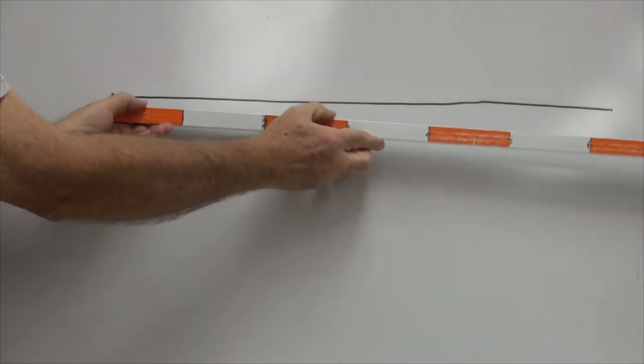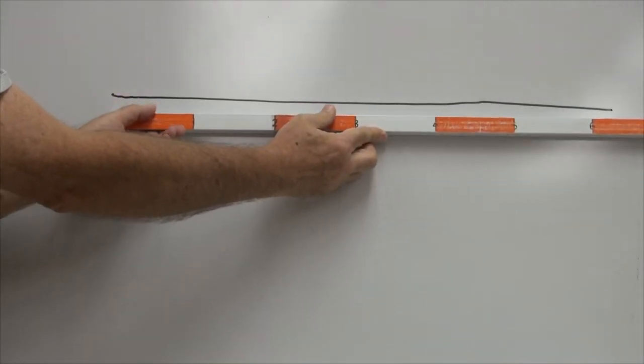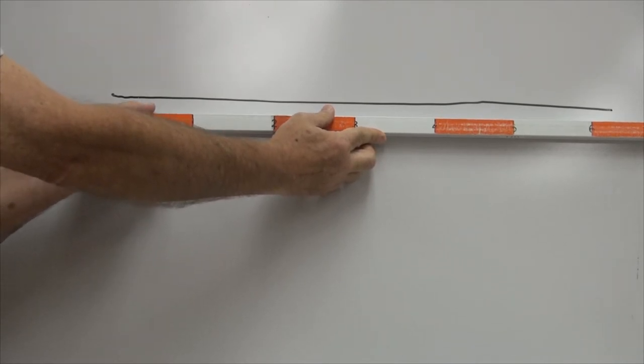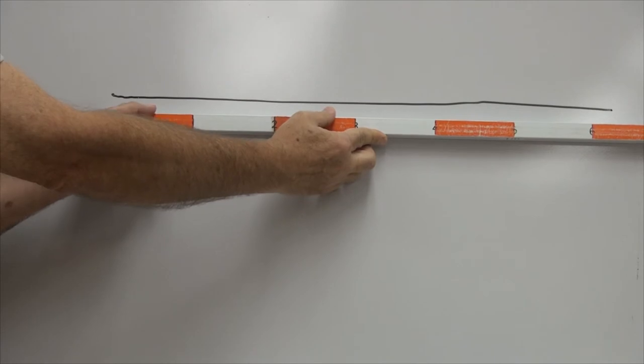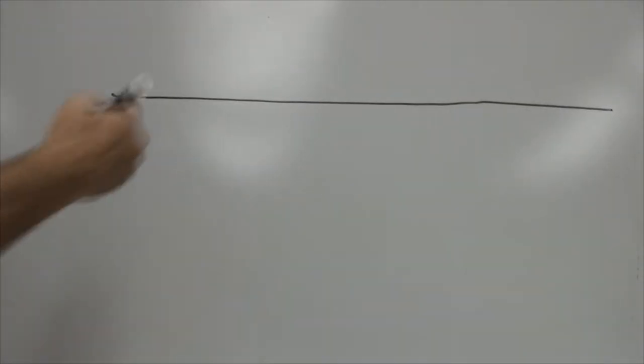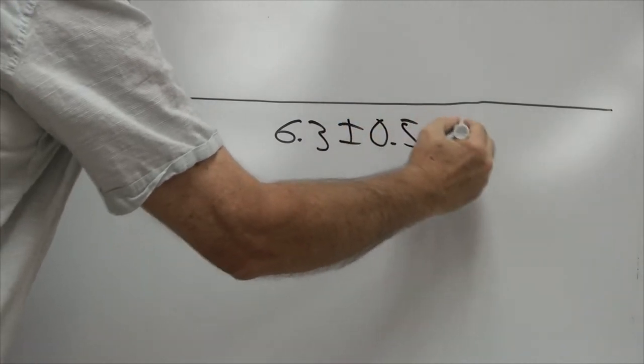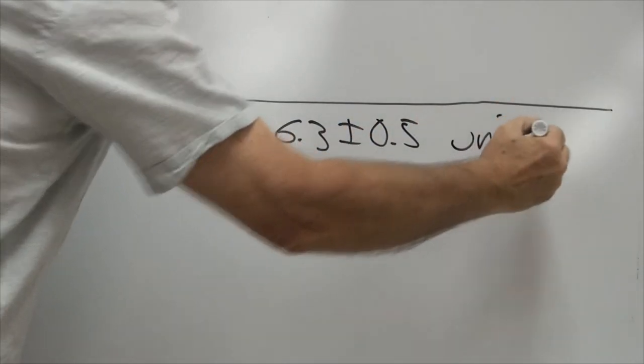To measure the length of this line, we place the meter stick next to it, and we see that the length lies somewhere between 6 and 7 units. The rule of thumb is to take the experimental uncertainty in the last measured digit to be plus or minus one half of that smallest unit.